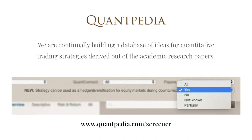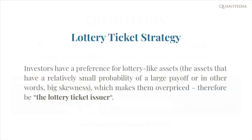We at Quantipedia are continually building a database of ideas for quantitative trading strategies derived out of academic research. Motivated by the recent fall of the S&P 500 index at the end of 2018, we have added a new filtering field into our screener. You can use it to find strategies that can be utilized as a hedge or diversification to equities during bear markets. We would like to present one strategy that is profitable itself, but with an added value of negative correlation with the equity market.